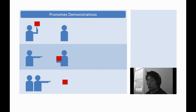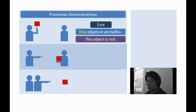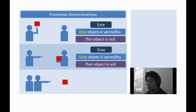Now, let's see the PRONOMES DEMONSTRATIVOS. In Portuguese, both demonstrative pronouns and demonstrative adjectives are called demonstrative pronouns. Let's see the examples. Este — it is used to show something close to the speaker. Este objeto é vermelho. This object is red. Esse — it is used to show something close to the listener. Este objeto é vermelho. That object is red.